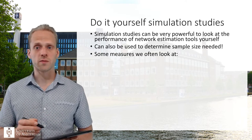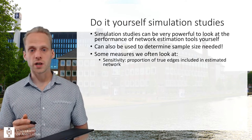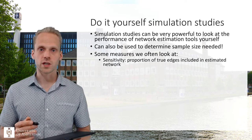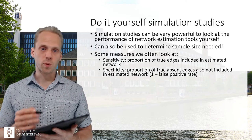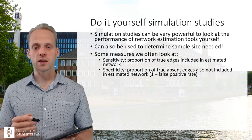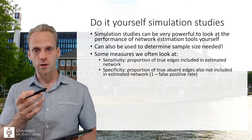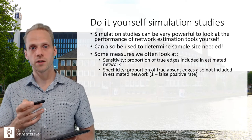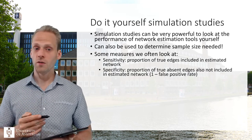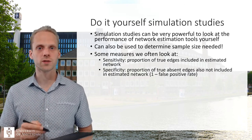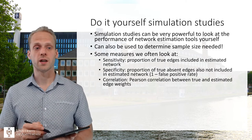That brings me to some measures we often look at. Sensitivity is the proportion of true edges included in the estimated network — you can think of this as statistical power to detect true effects. Specificity is the proportion of truly absent edges that are also not included in the estimated network. We can think of specificity as 1 minus the false positive rate.